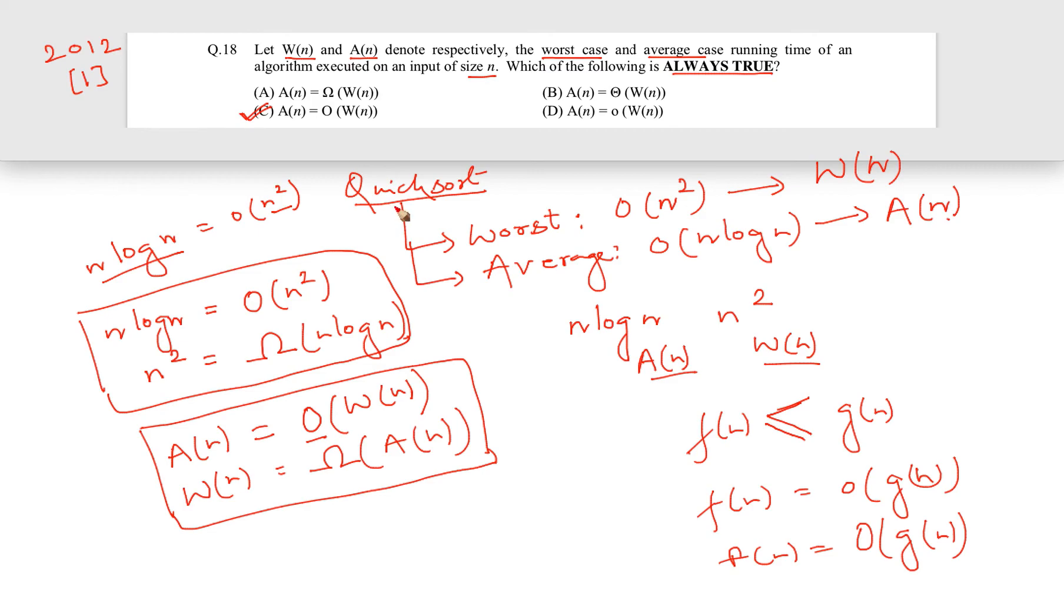For example, what about other sorting algorithms or any other algorithm, let us say, which takes order n square in worst case also and order n square in average case also? In that case, the expression for w(n) is also n square, expression for a(n) is also n square. So in that case, a(n) is equal to little-o of w(n) will not hold, because n square is not strictly bigger than n square. So I give you an example why this is wrong. And other examples we can clearly see why they are wrong. So C is the answer.